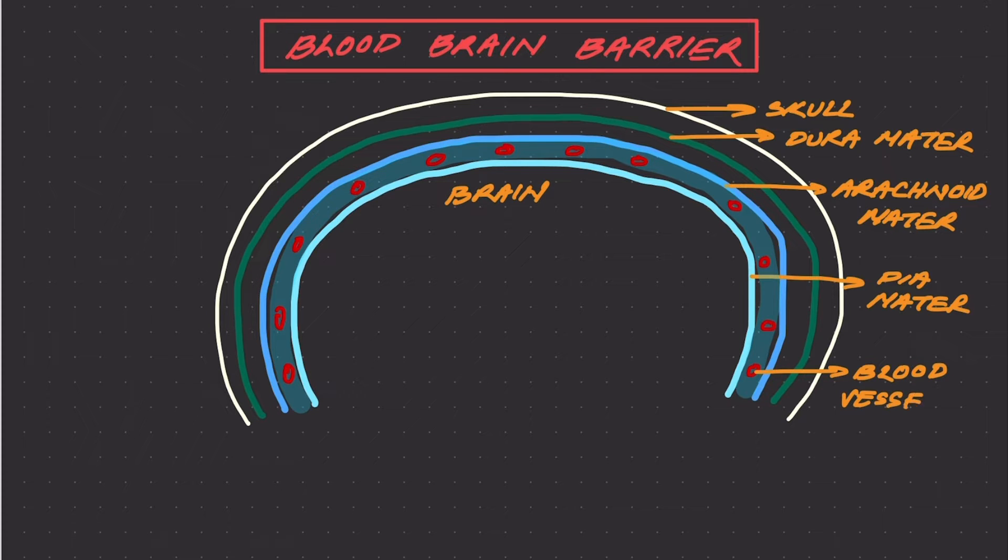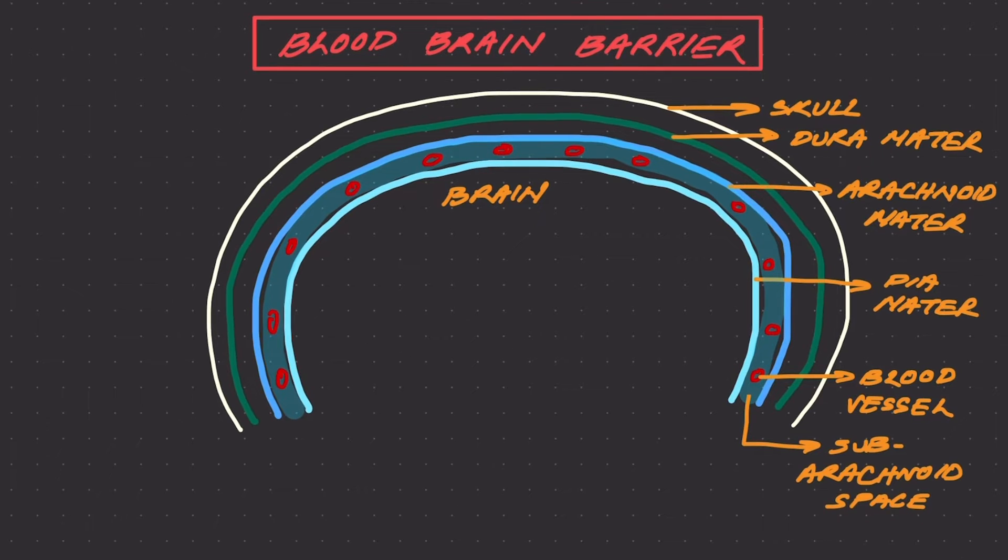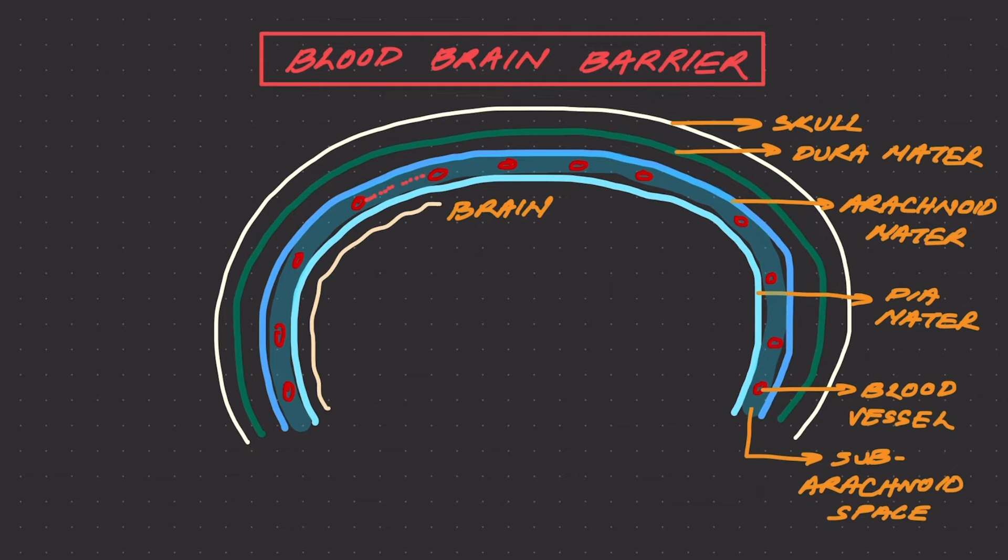So you see, blood vessels in the brain are not everywhere. These blood vessels are not running down into the brain. They limit themselves in the subarachnoid space. Blood drains its contents in the CSF, in the subarachnoid space.